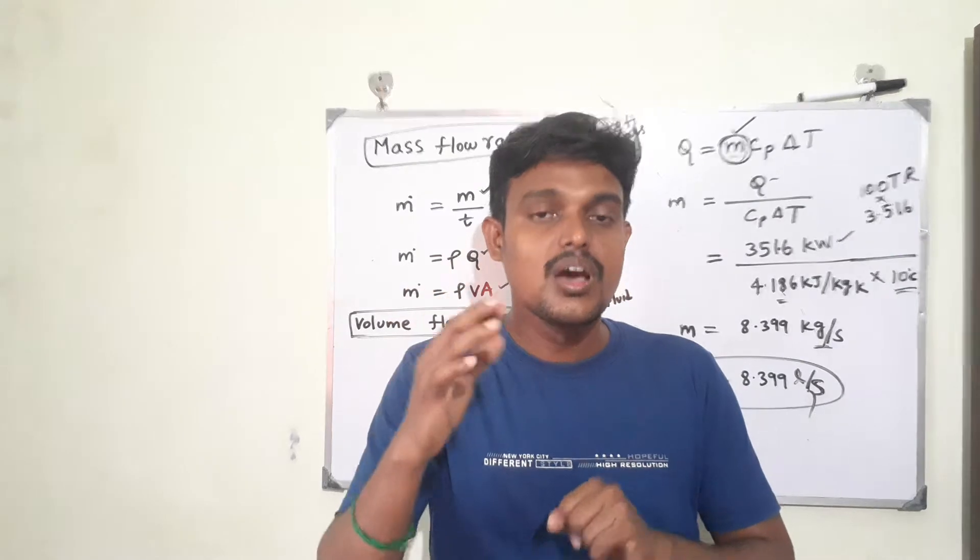We will call this a high delta T. In the same way, in another scenario, if your delta T is coming below your design delta T — for example if I am getting the temperature between the chilled water in and out as 5 degrees Celsius, but the design delta T is 10 — it means that it is a low delta T. If your chiller system is running with low delta T for a long time, you will be getting a lot of problems in your chiller system and you are losing your energy.